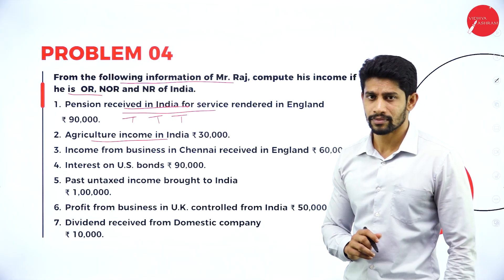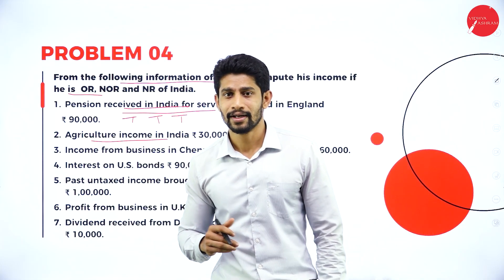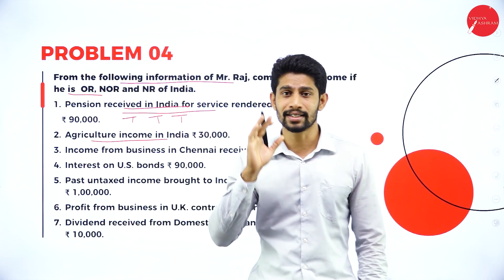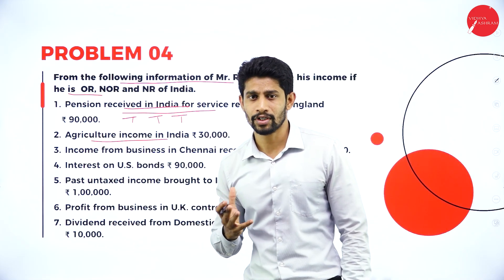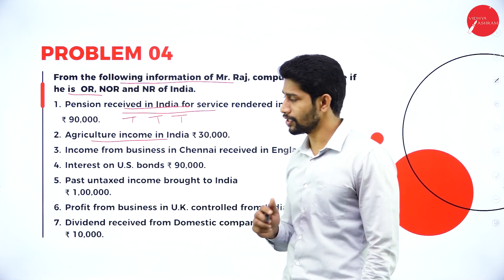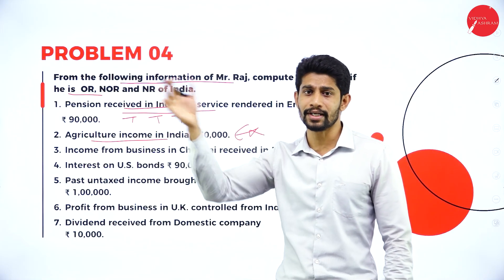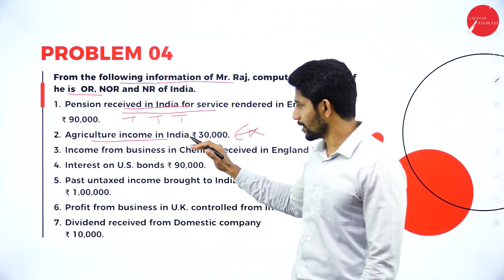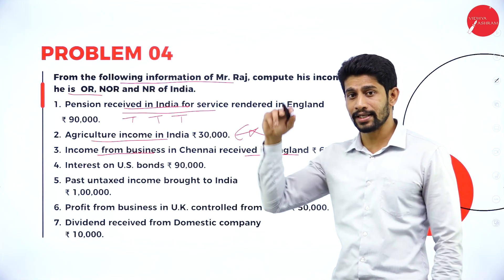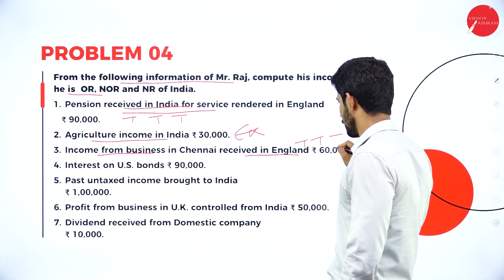Agriculture income in India: as discussed in unit 1, we have certain exemptions under section 10 of the Income Tax Act 1961. Agriculture income is exempted under section 10(1) in order to motivate the farmers — we do not charge any tax on farmers' income. So this is exempt — nil, nil, nil. Note: agriculture income from a foreign country is taxable, but if earned in India, it is exempt. Next: income from business in Chennai received in England — income generated in Chennai (India), so taxable, taxable, taxable.